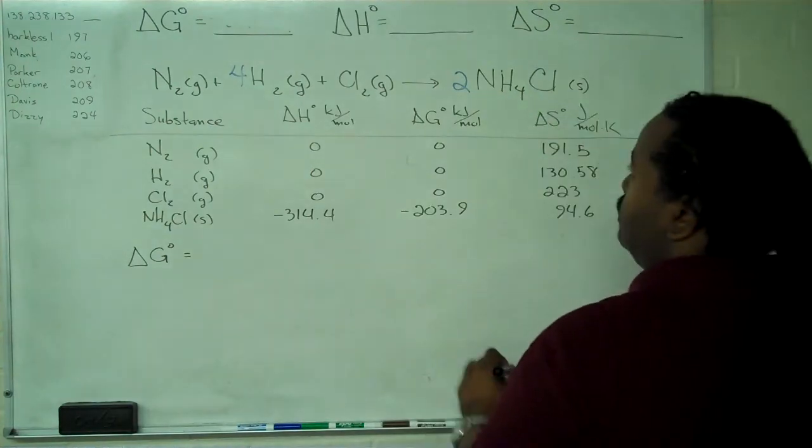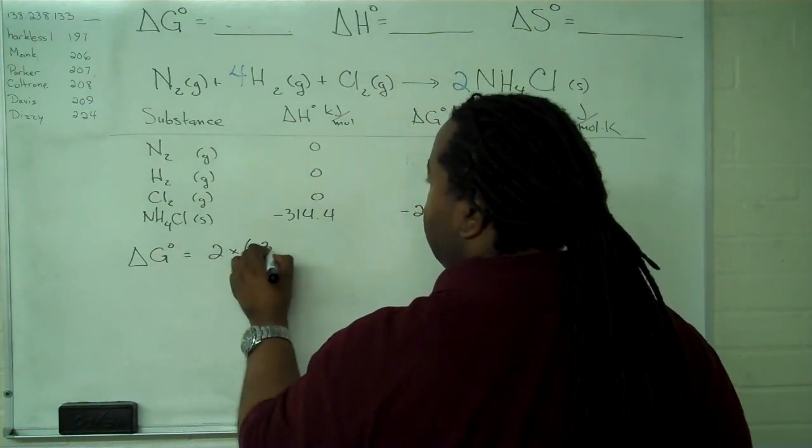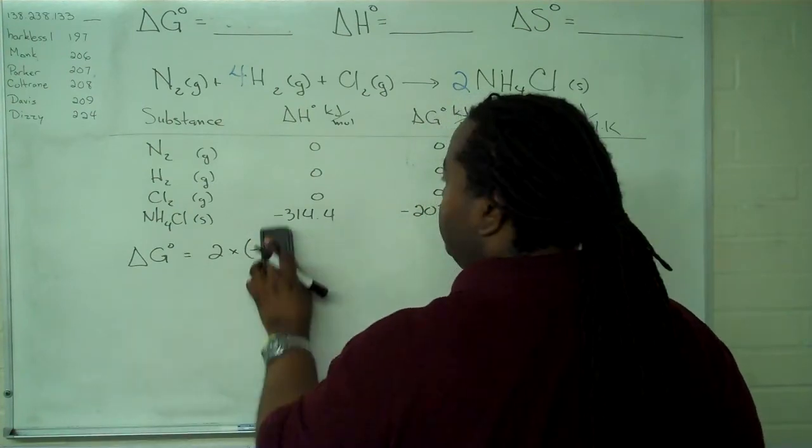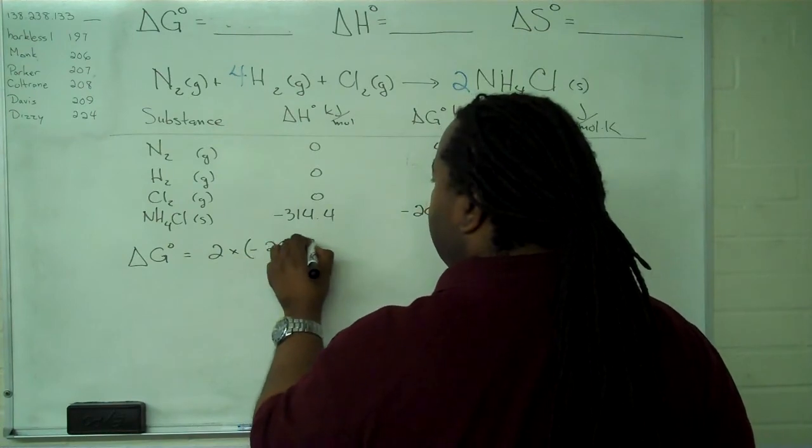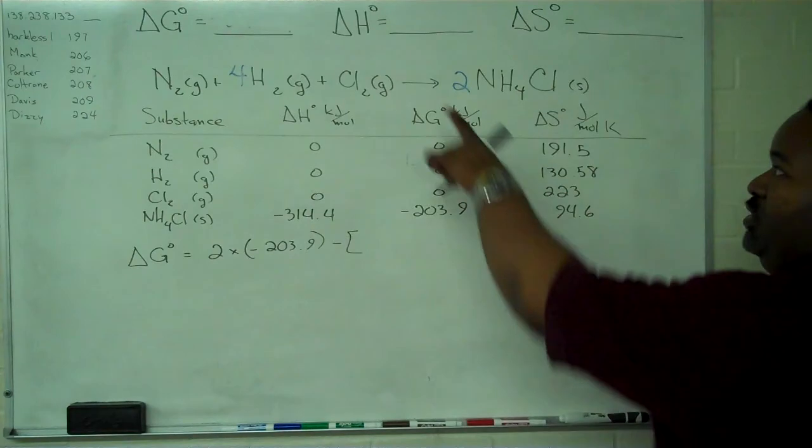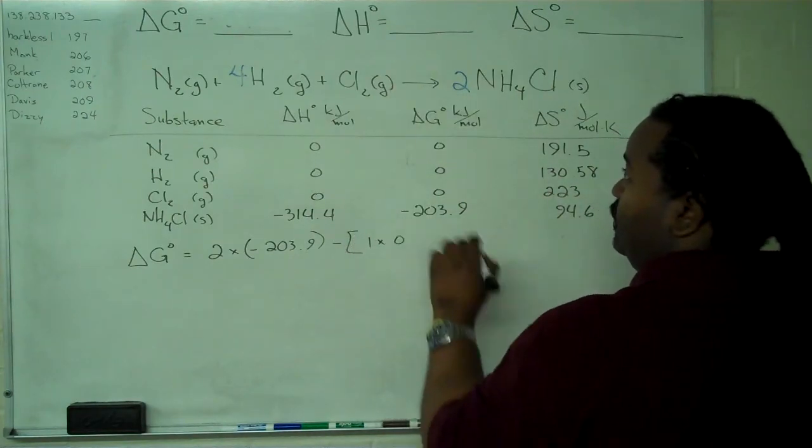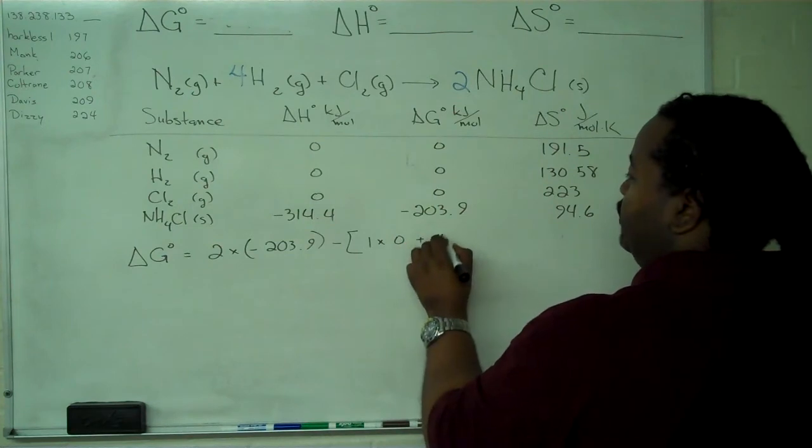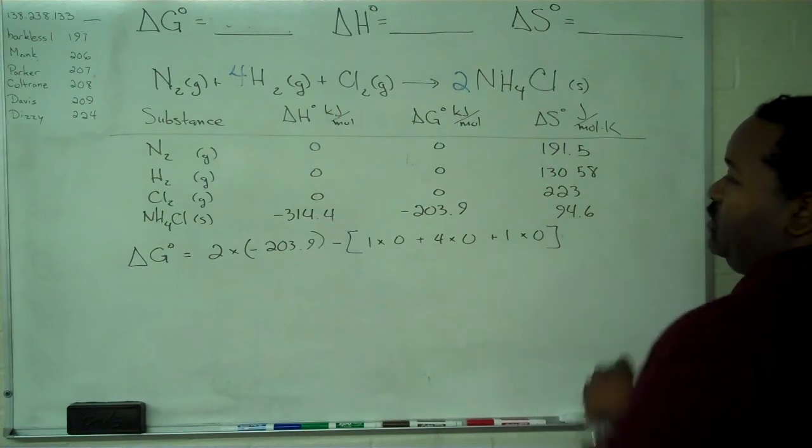we need two times minus 203.9 minus the stoichiometric sum of the reactants. So that's one times zero for the nitrogen, plus four times zero for the hydrogen, and one times zero for the chlorine.